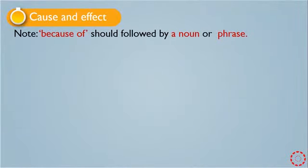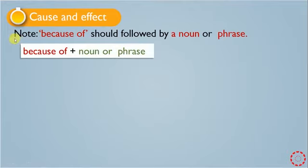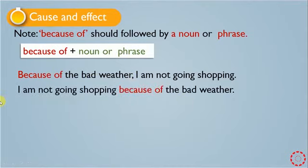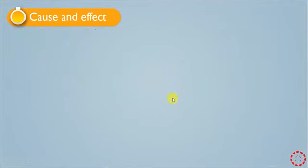We have a note here: 'because of' should be followed by a noun or phrase — not a full sentence. Look at this example: 'Because of the bad weather' — 'the bad weather' is not a full sentence, it is a phrase. And we also have an effect here: 'I'm not going shopping because of the bad weather.' You are not going shopping. These expressions can come at the beginning or in the middle of the sentence.